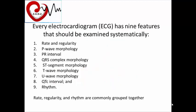In every electrocardiogram, we have nine features that will be examined systematically. We must talk about rate and regularity, P-wave morphology, PR interval, QRS complex morphology, ST segment morphology, T-wave morphology, U-wave morphology, QTc interval, and rhythm. Usually, heart rate, regularity, and rhythm are commonly grouped together.